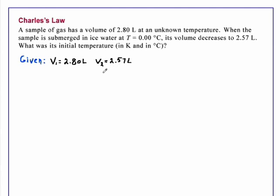At a temperature T2 of 0.00 degrees C. Now, what we are asked to find is what was the original temperature. So we want to find T1 both in Kelvin and degrees Celsius.